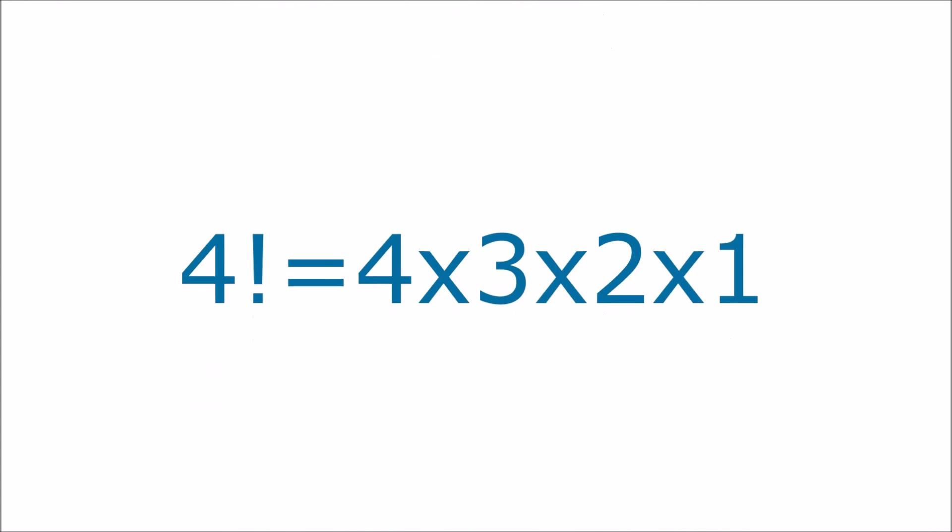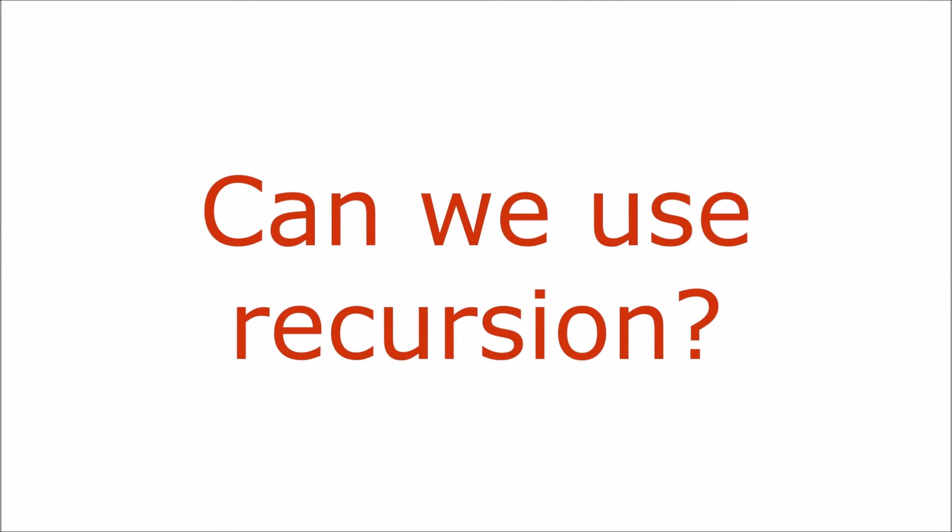4 factorial is equal to 4 times 3 times 2 times 1, which is 24. This definition can be extended to find the factorial of any positive whole number. Can we use recursion to calculate factorials? Of course we can.